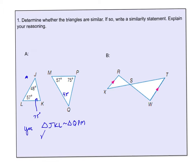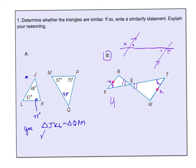The similarity statement would be triangle JKL similar to triangle QPM. For part B, we're looking at two parallel lines. Because of the parallel lines, angle X and angle T are congruent — those are alternate interior angles, going back to unit 2. Additionally, the two angles at the intersection are vertical angles, so they're also equal. That's enough to say yes, those two triangles are similar. The similarity statement is triangle RSX similar to triangle WST — two sets of congruent angles.